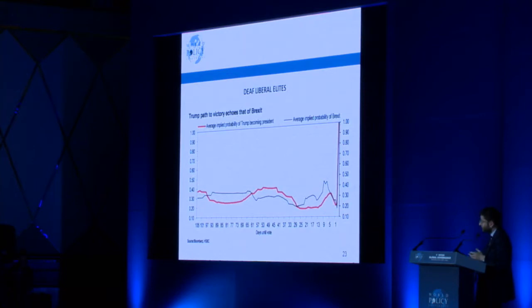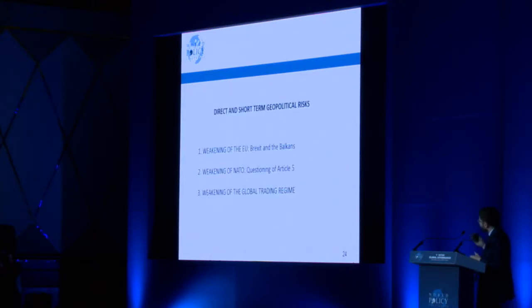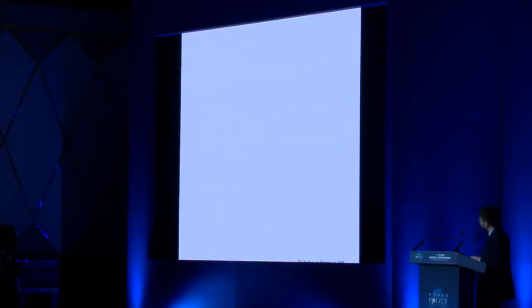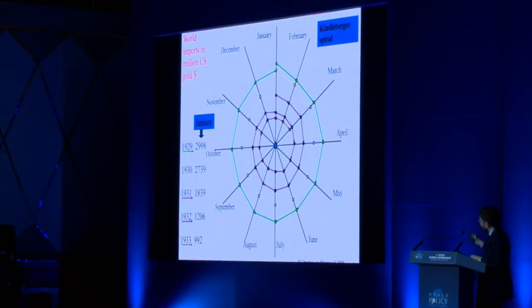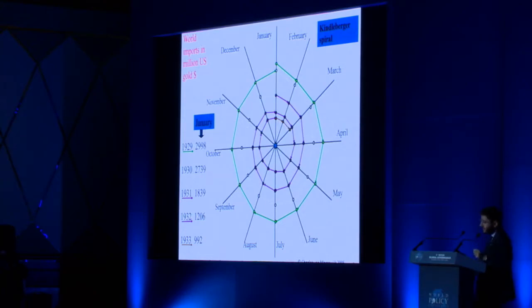One of the things I'll point out is how deaf liberal elites have been through this entire process. We've built huge echo chambers — we've been quite relaxed about what was going on, in some cases even ignorant about the erosion of our middle class. This shows our capacity to predict Brexit and the Trump victory. My thesis is that the direct short-term political risks are a weakening of the EU, weakening of NATO, and weakening of the global trading regime. International trade between January 1929 and January 1930 collapsed to a third of what it was — international trade is incredibly fragile to tariff wars and revision of treaties, which is precisely what we're starting to see.